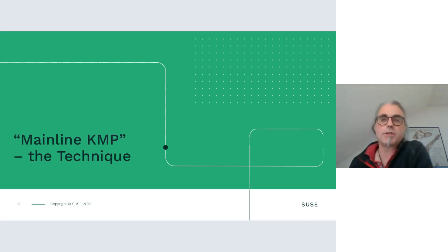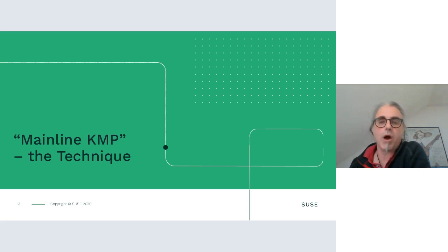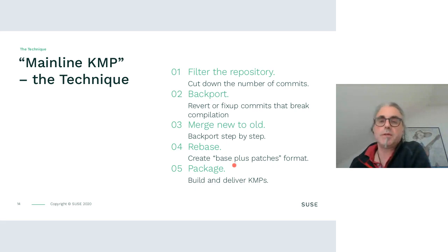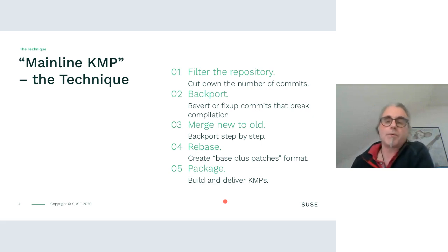I'm going to present some details about the technique I've been experimenting with quite a bit over the previous months. There are basically five steps: first, filter the mainline repository; second, do the actual backport; third, continue the backport work from newer to older distributions; then a rebase step; and finally, create the kernel module package.